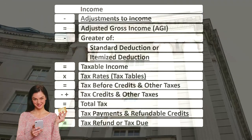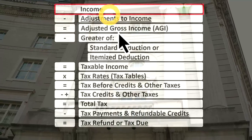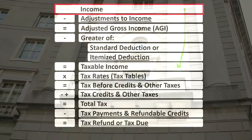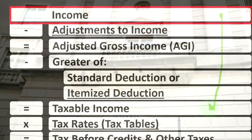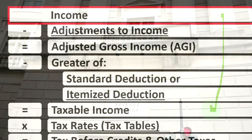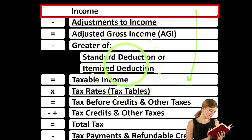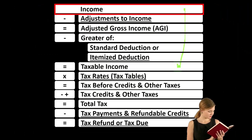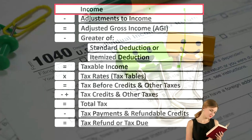Looking at the income tax formula, we're focused on line one income. The first half of the income tax formula is in essence an income statement, although just an outline — a scaffolding — with other forms and schedules flowing into it. One of them is the Schedule C, which is an income statement in and of itself, having business income minus business expenses, with the net business income flowing into line one income of our income tax formula.